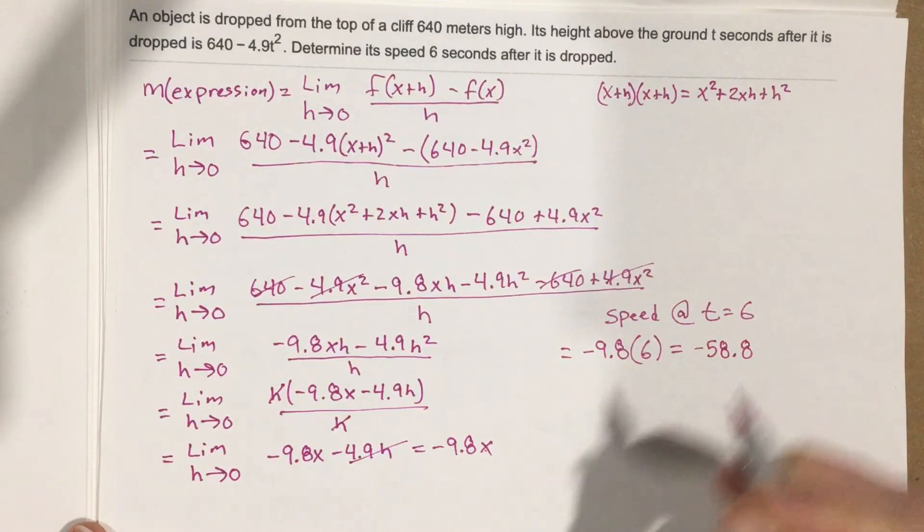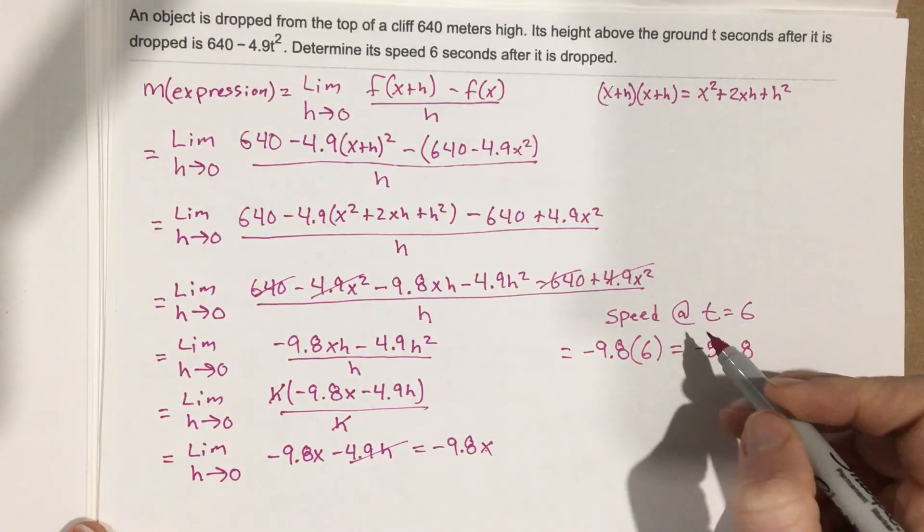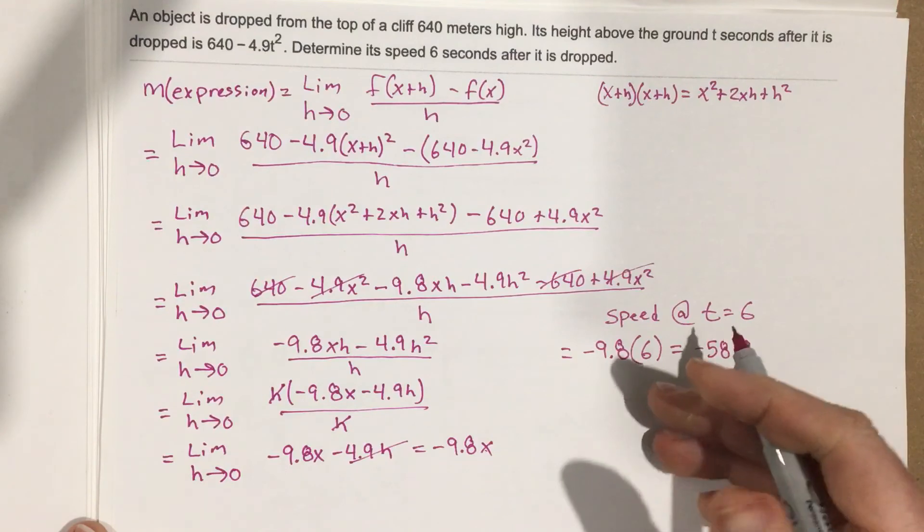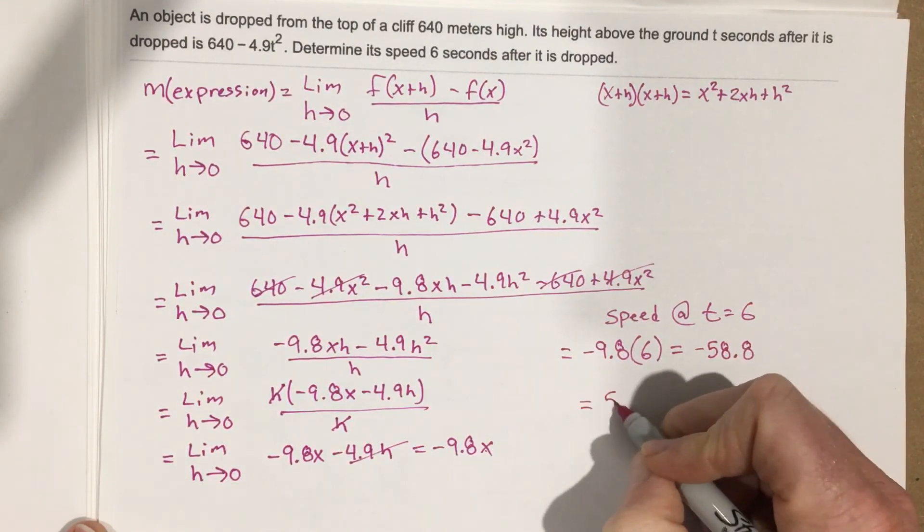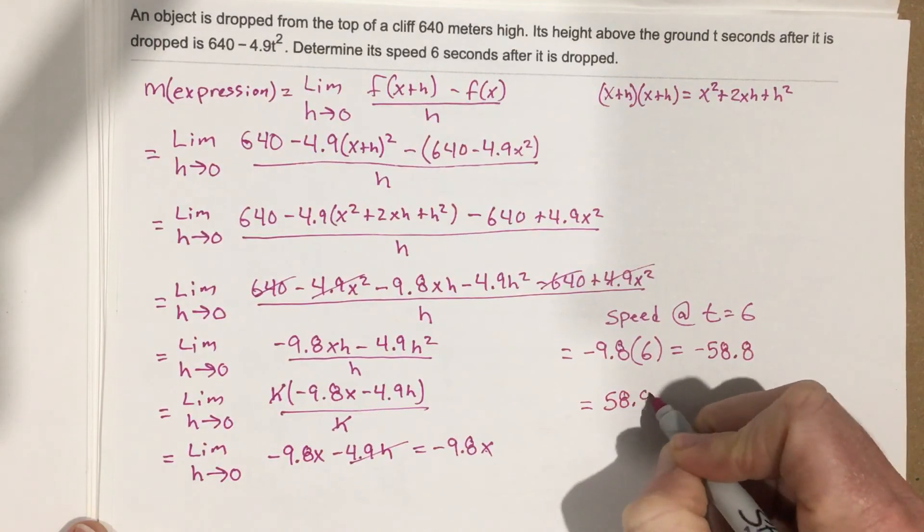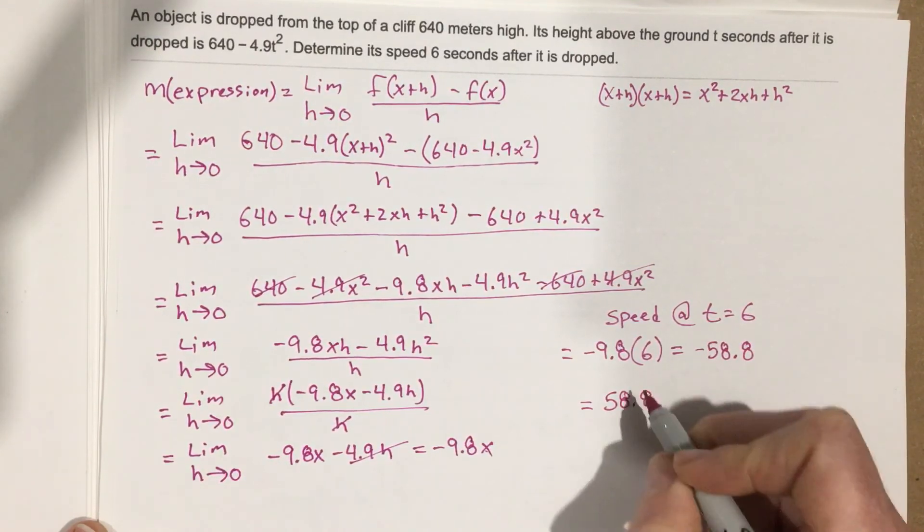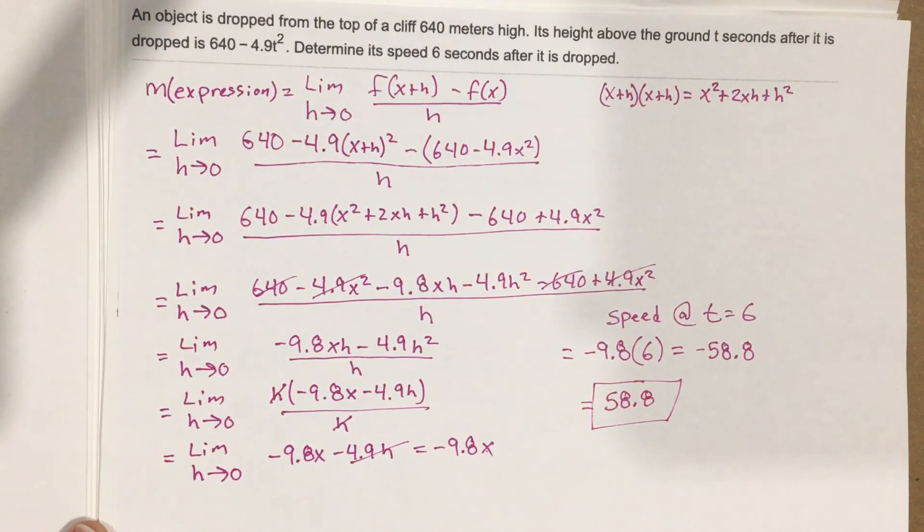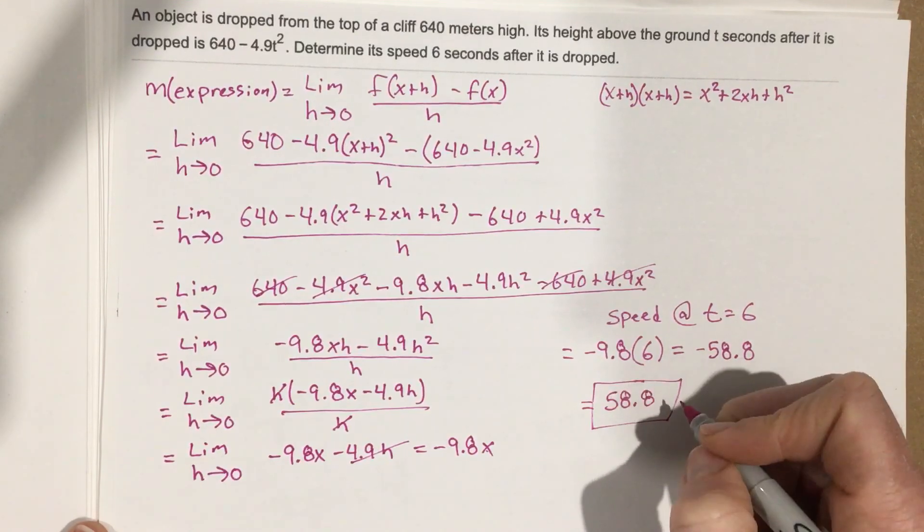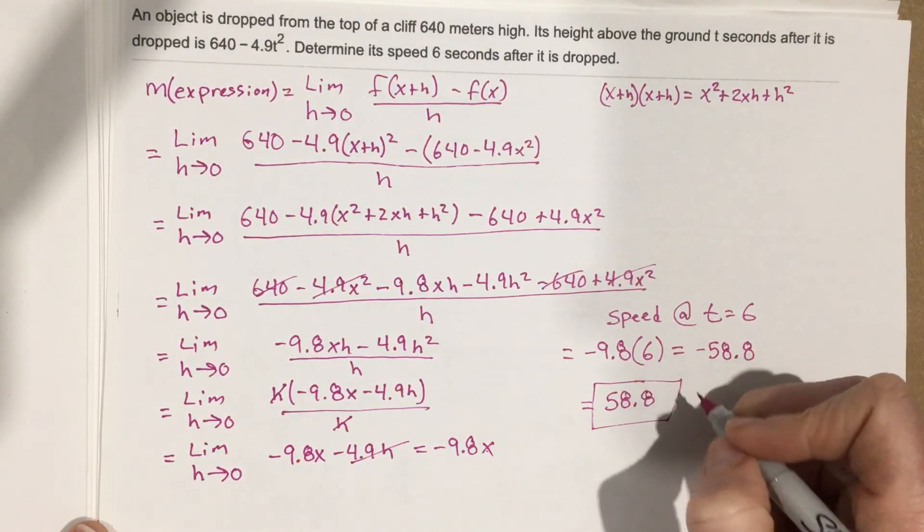But remember, we don't want to say negative 58.8, that's just telling us that we're moving downwards in direction. We really want to say that this is 58.8 for a speed because we don't care about the direction. So 58.8 is the speed, and that'd be in meters per second.